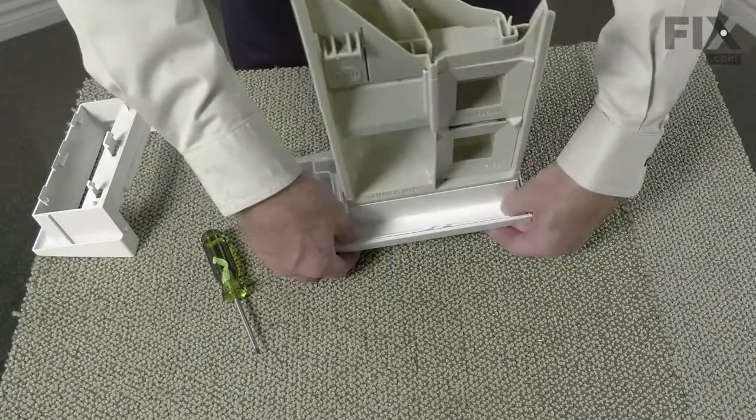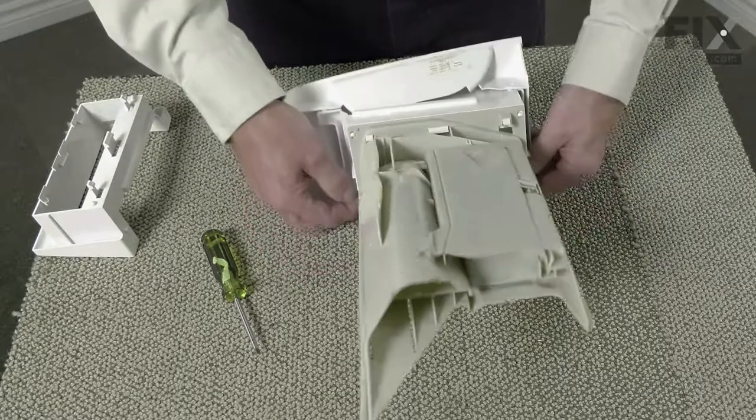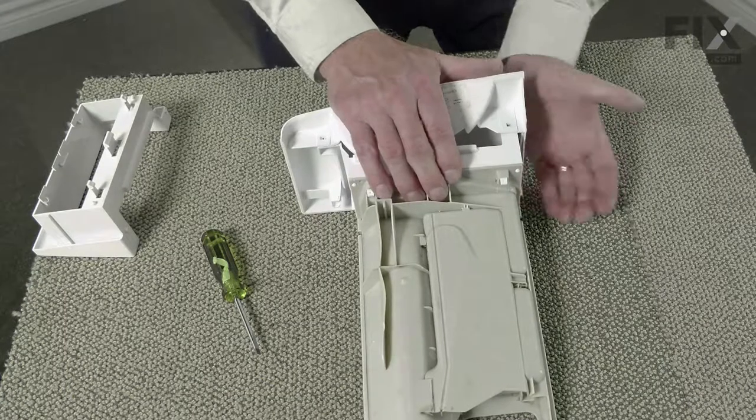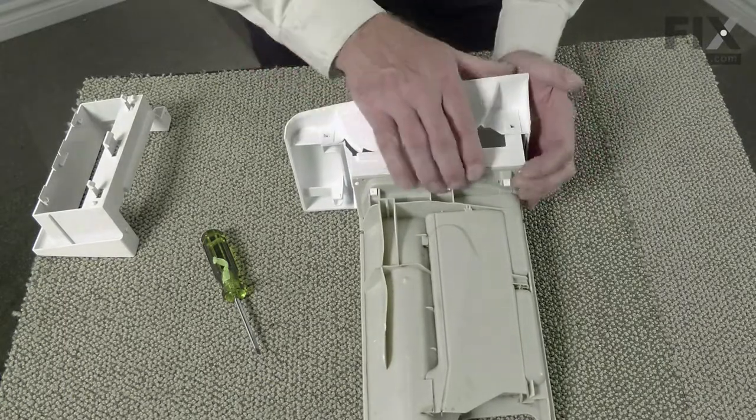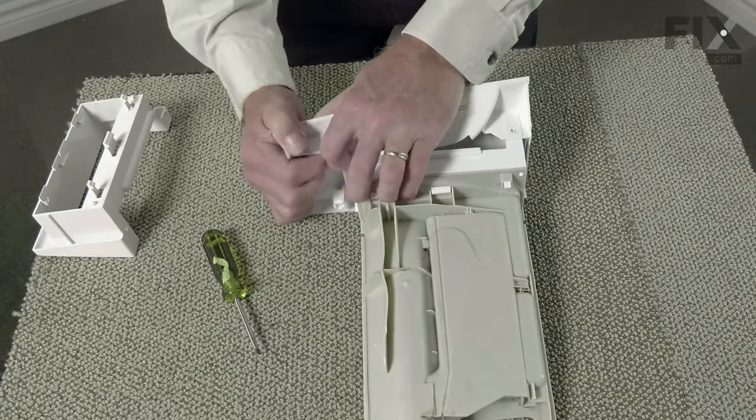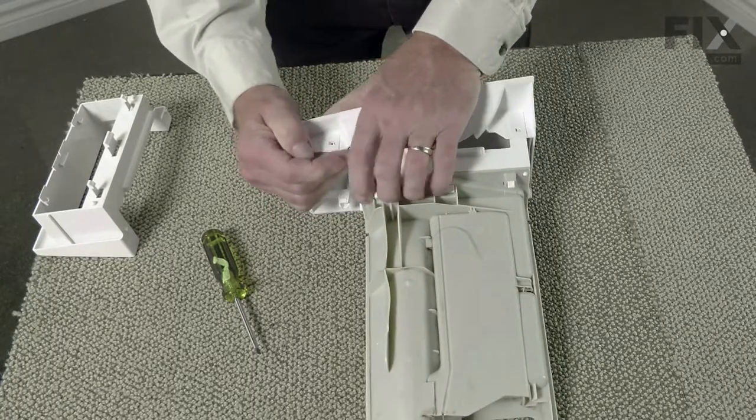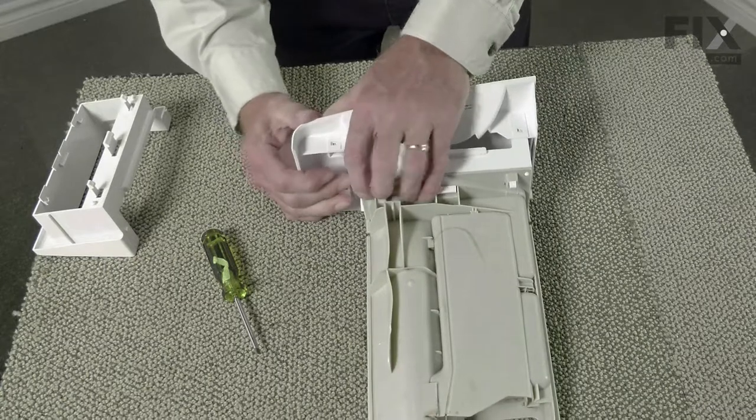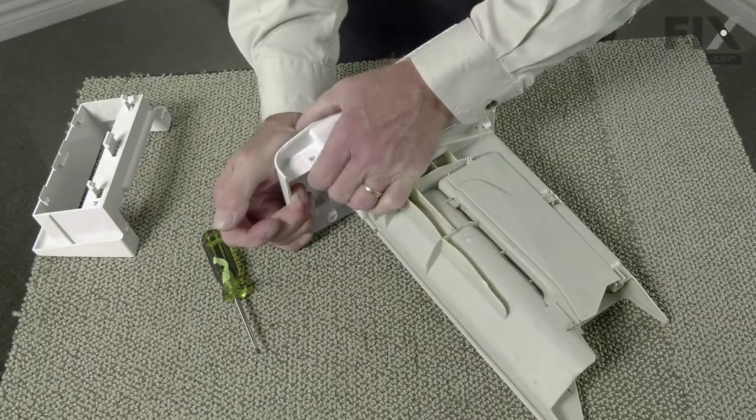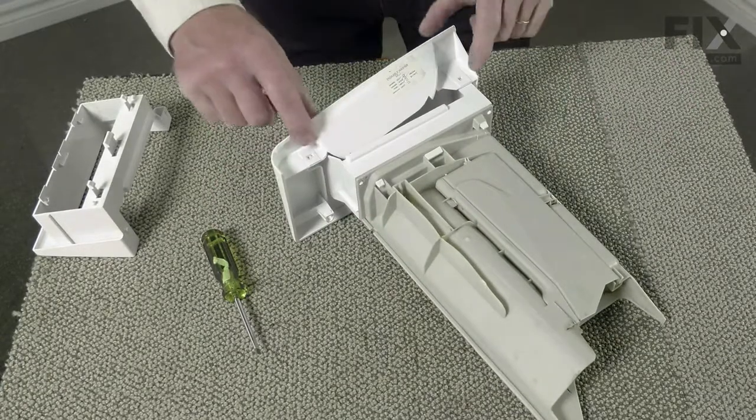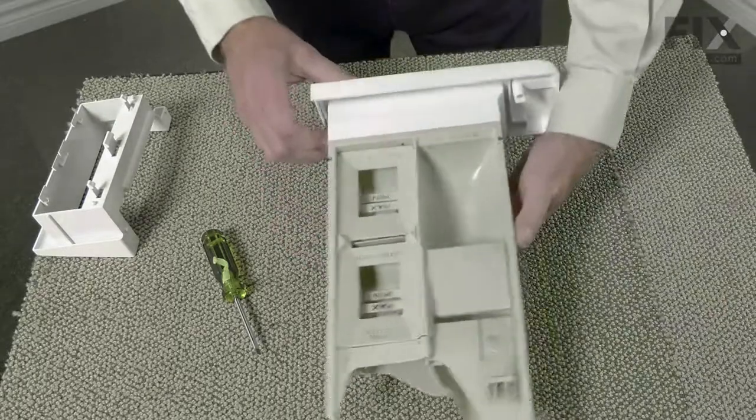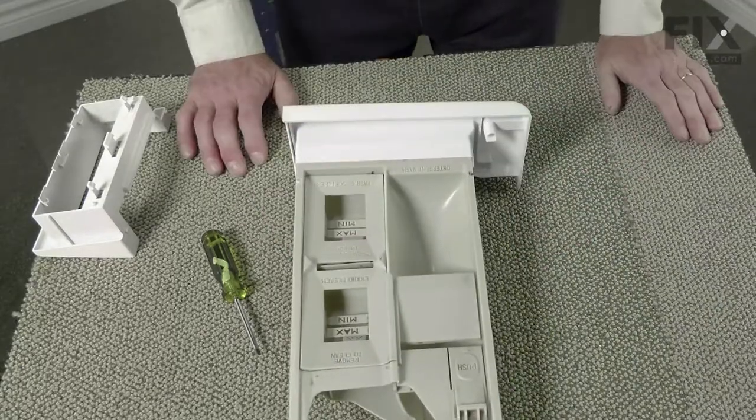Just grab both sides, pop it into place, and you can lay it down. And then we'll snap the bottom end so that we engage these two tabs. Once we've ensured that both of those are properly engaged, we can then put that dispenser back into the washer.